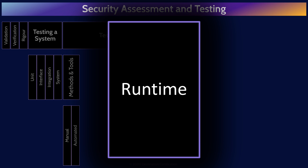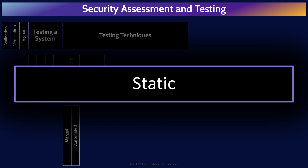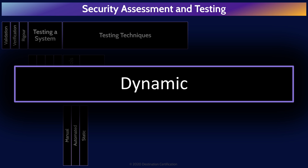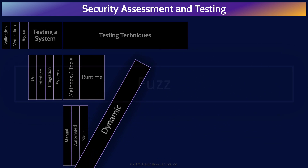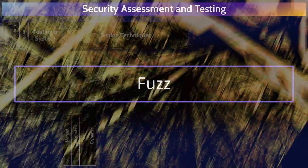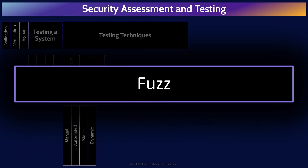Runtime is about whether or not the code is running. Static testing is testing a system that isn't running — it's looking at code. Dynamic testing means the software is running, so you're testing a running system. Fuzz testing is a form of dynamic testing. Programmers expect logical input and provide logical output, so if you throw chaos at a system — massive amounts of random data — you can identify unexpected errors and vulnerabilities. That's what fuzz testing is: random chaos thrown at a system.